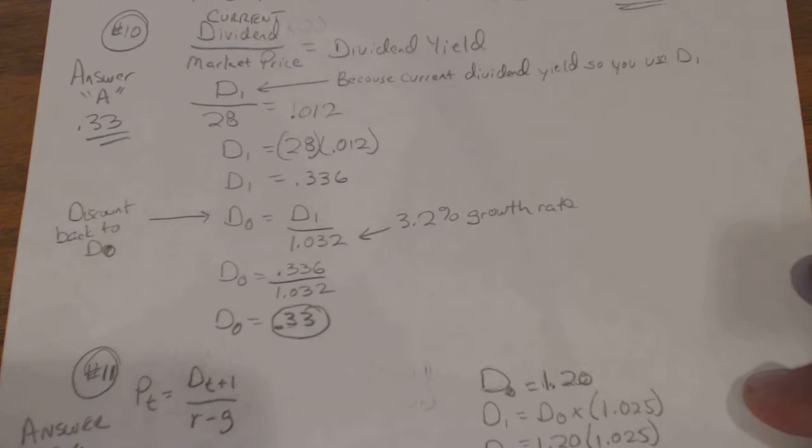Okay, practice problems part two, problem number 10. What it basically says is Better Built Home stock is selling for $28 a share, so that's its current price, and has a dividend yield of 1.2 percent. What is the amount of the last dividend paid if the growth rate is 3.2 percent?